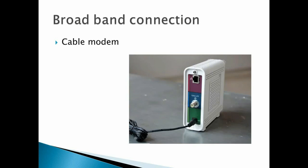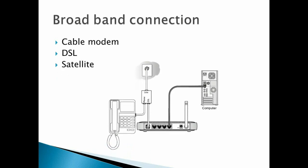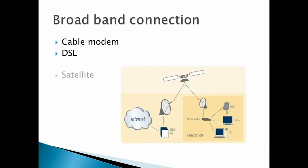Broadband connection types: first is cable modem. Using a cable modem you can connect to the internet — it is a device to which you can connect your telephone line, and at the front side there will be two wires: one connected to your landline and the other to the CPU. Next is DSL — a kind of device which connects both CPU and landline. Then satellite: you will have some satellite router, and through that router you can connect to the telephone or to a computer or laptop.